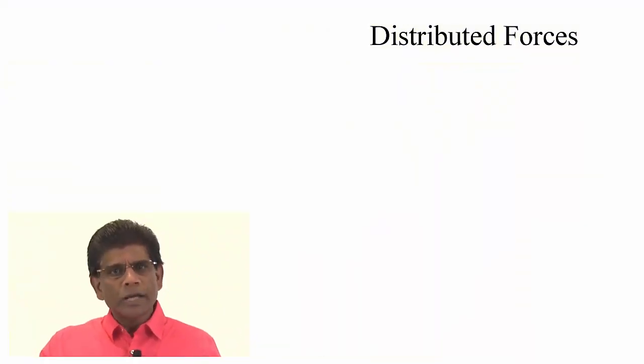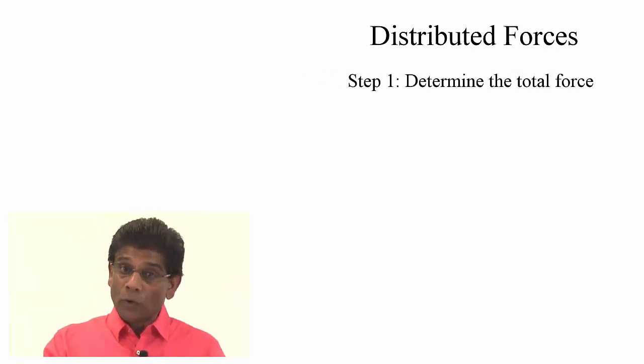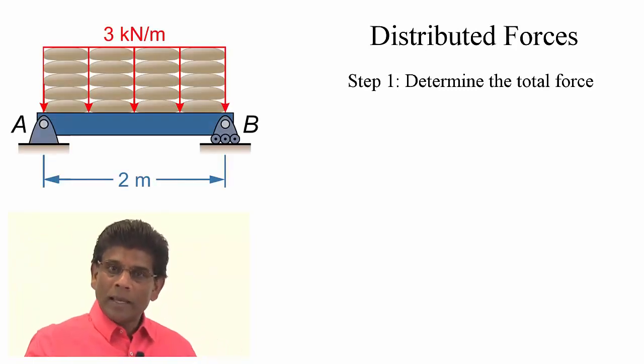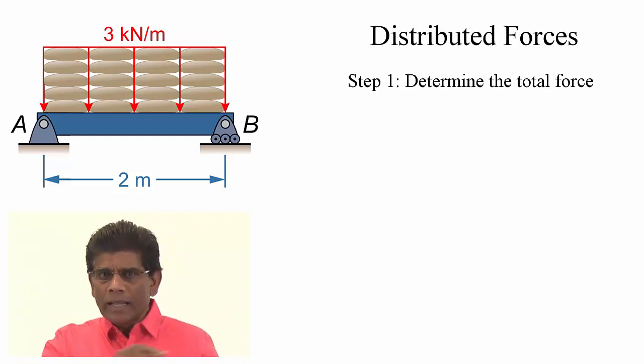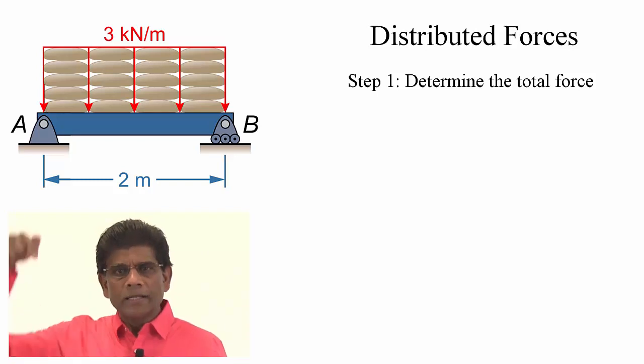First, to convert the distributed load to an equivalent concentrated load, we determine the total force. The total force is the area under the loading curve. It is easy to find the area when we deal with a uniform distribution like the one shown here. It is a rectangle. Finding the area of a rectangle is something we all know very well. Here the area is defined by multiplying the length of the beam and the intensity of the force.